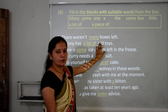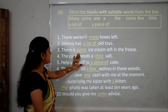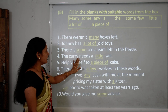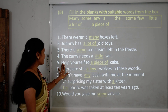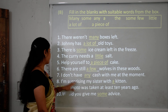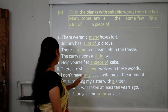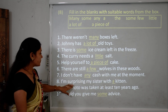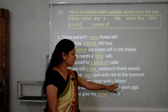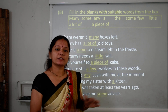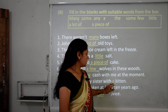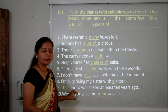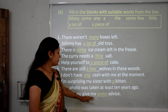Sentence 2: 'Johnny has a lot of old toys.' Sentence 3: 'There is some ice cream left in the freezer.' Ice cream is uncountable, so we can write 'some.' Sentence 4: 'The curry needs a little salt.' Sentence 5: 'Help yourself to a piece of cake.' Sentence 6: 'There are still a few wolves in this woods.' Sentence 7: 'I don't have any cash with me at the moment.' Sentence 8: 'I am surprising my sister with a kitten.' Kitten is countable so we use 'a.' Sentence 9: 'The photo was taken at least 10 years ago' — we use 'the' because we're talking about a particular photo. Sentence 10: 'Would you give me some advice?'